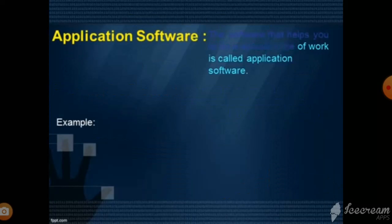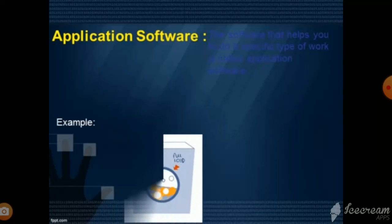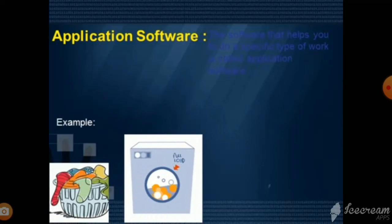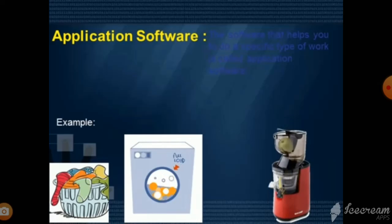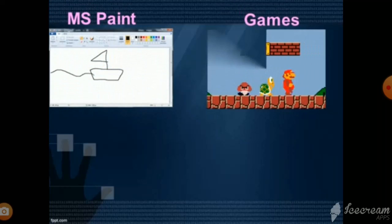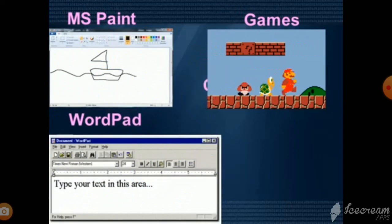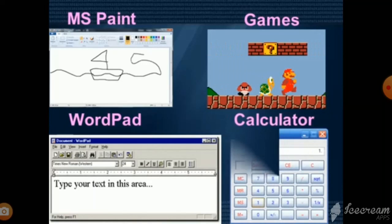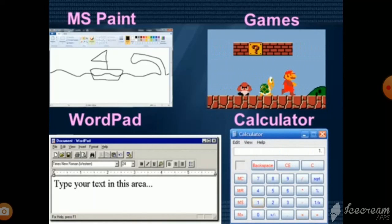Application software. The software that helps you to do a specific type of work is called application software. Example: what do you do with a washing machine in your house? You can only wash the clothes with it. Juicer is used to extract the juice of fruits and vegetables only. This indicates that you can do a specific type of job with these machines. There are different types of application software that help in doing specific types of jobs. For example, MS Paint, used for drawing pictures. Games, used for entertainment. WordPad, used for typing and making corrections in the text. And calculator, used for doing calculations. Likewise, there are a number of application software that are present in our computer.